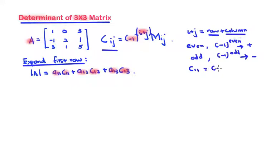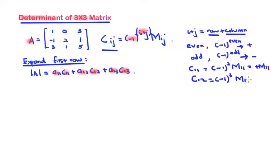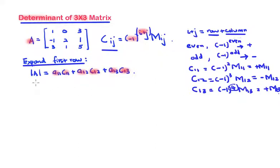For example, c11 has sign negative 1 raised to 1 plus 1, which is 2, so m11 is positive. c12 is equal to negative 1 raised to 1 plus 2, which is 3 — an odd number — so c12 equals negative m12. And c13 is negative 1 raised to power 4, where 4 is even, so c13 is positive m13. So a11 is 1, meaning c11 is positive m11, and c12 is negative m12.